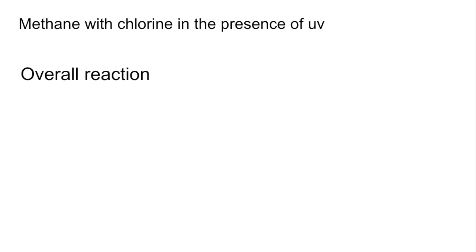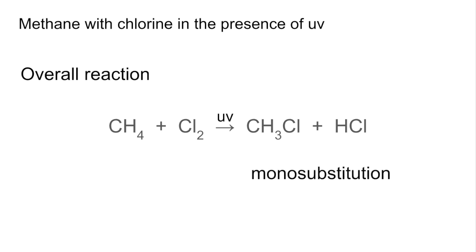So the overall reaction is straightforward substitution of a hydrogen atom from the methane with a chlorine atom from the Cl2 molecule. And we get chloromethane and hydrogen chloride. And because there's only been one substitution, this is called monosubstitution.